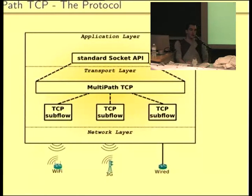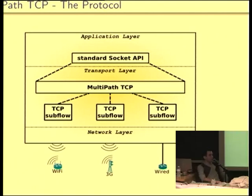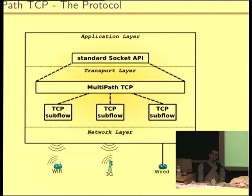I'll explain how MPTCP achieves using several interfaces at the same time. Basically, you have the standard socket API — the application is still talking to a regular socket as with TCP. Then you have a Multipath TCP layer which creates several TCP subflows, and each subflow uses one of the interfaces. For example, the left subflow runs over Wi-Fi, the one in the middle runs over 3G. The data stream from the application is then distributed over the different TCP subflows, making it possible to use all available interfaces.